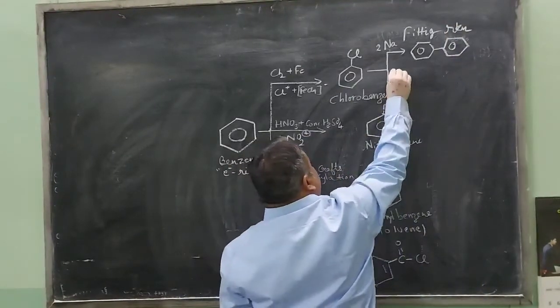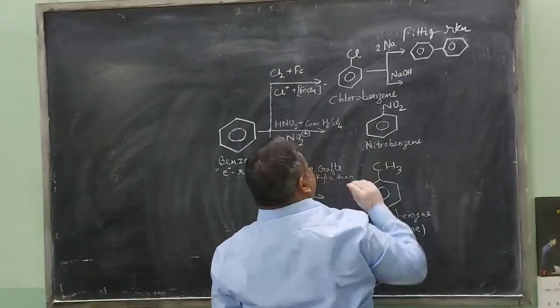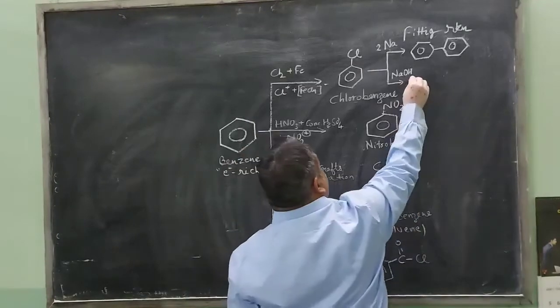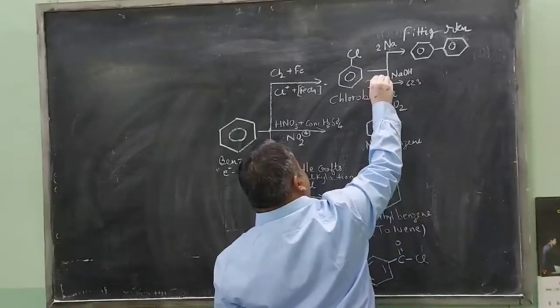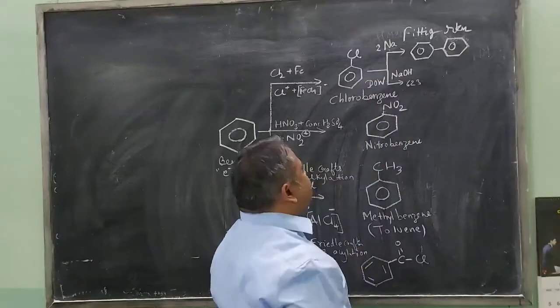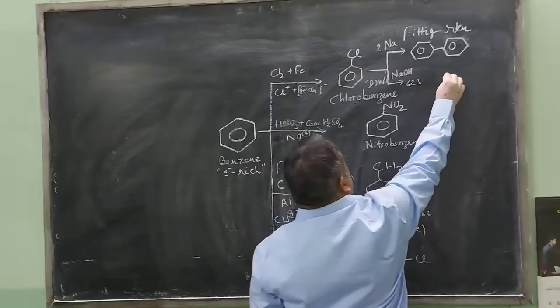If you fuse it with sodium hydroxide at 623 Kelvin, then this will undergo Dows reaction. The process is also called Dows process and will form phenol.